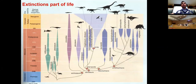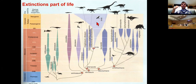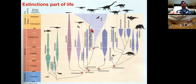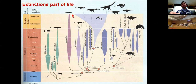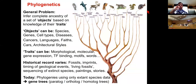Extinctions are part of life — that's how evolution works. They give rise to new expansions as evolutionary niches become unpopulated and available for other species. This is a tree of the dinosaurs; there was a massive extinction event in the Mesozoic, giving rise to only two surviving dinosaur lineages today: crocodiles and birds.